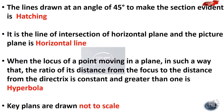Lines drawn at an angle of 45 degrees to make the section evident is called hatching. The line of intersection of the horizontal plane and the picture plane is the horizontal line.